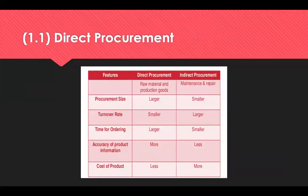Direct procurement is a process of acquiring resources going into building the actual product or service the business is offering. For example, a smartphone manufacturer would need to acquire resources such as microchips, processors and the screen — all directly related to offering that phone. For a product-based business, both direct and indirect procurements complement each other to create a balance for smooth functioning of an operation. They help organisations generate revenue and shape the consumer experience because they have the power to create or damage an organisation's reputation.